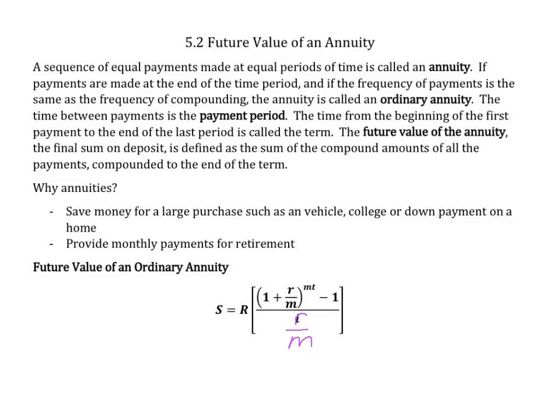Section 5.2: Future value of an annuity. If we have a sequence of equal payments made at equal periods of time, we call this an annuity. If payments are made at the end of the time period — such as the end of each quarter, the end of each month, the end of each year — and if the frequency of payments is the same as the frequency of compounding, the annuity is called an ordinary annuity.